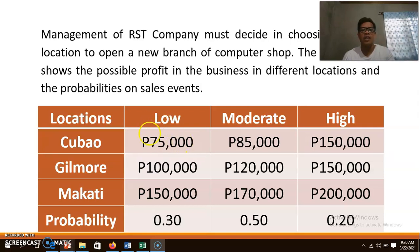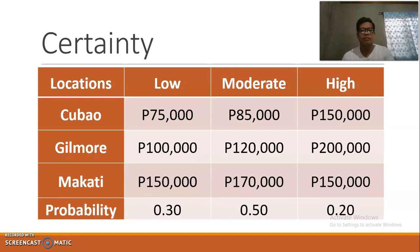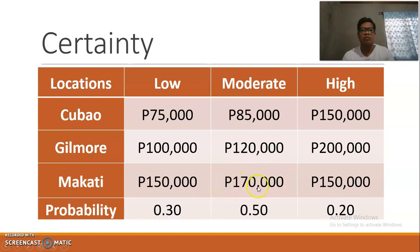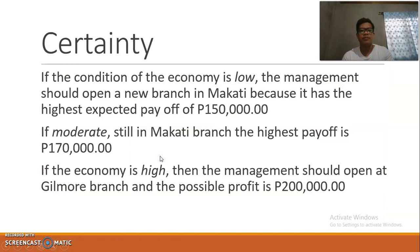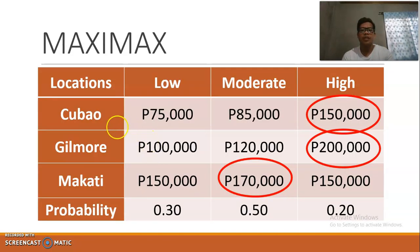For decision making under certainty: if the condition of the economy is low, the management should open a new branch at Makati. If it is moderate, again the company would open at Makati. But if the condition of the economy is high, then the company should open a new branch at Gilmore.